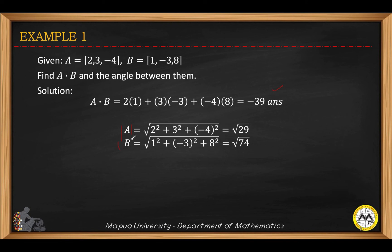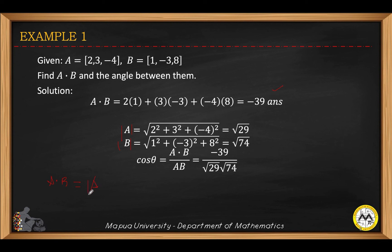Similarly we compute the magnitude of vector B. We know that A dot B equals the magnitude of A times the magnitude of B times cosine theta, so solving for cosine theta: substitute negative 39 over the product of square root of 29 and square root of 74, then take the arccosine of that value to get the angle between vectors A and B.